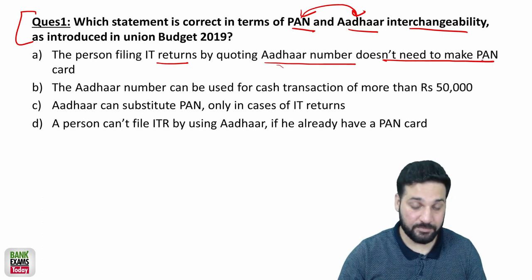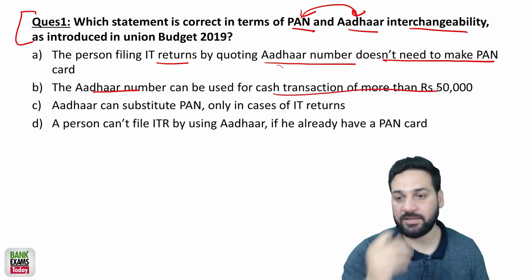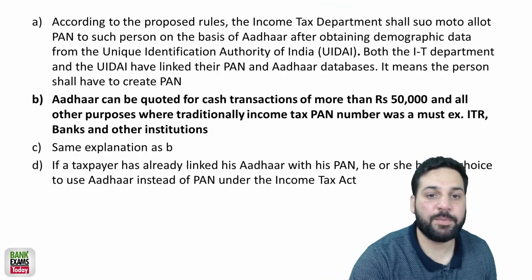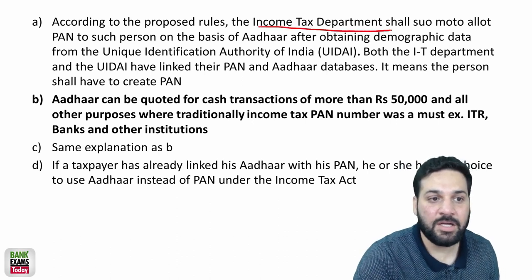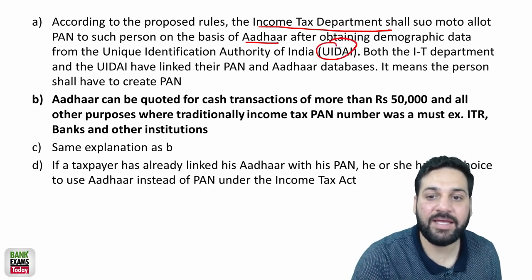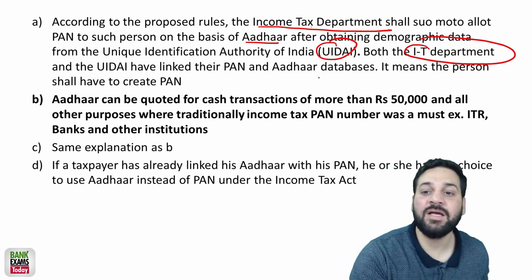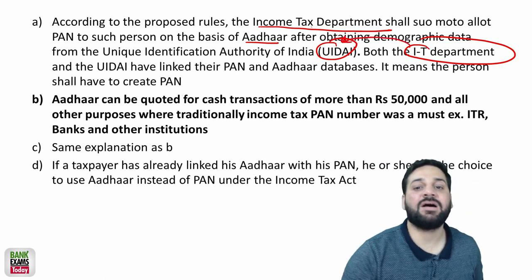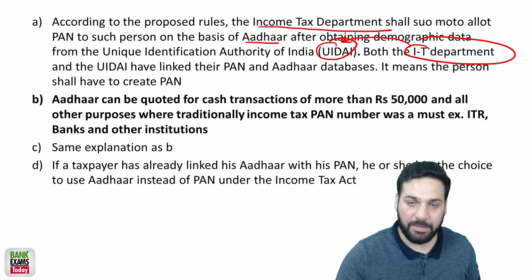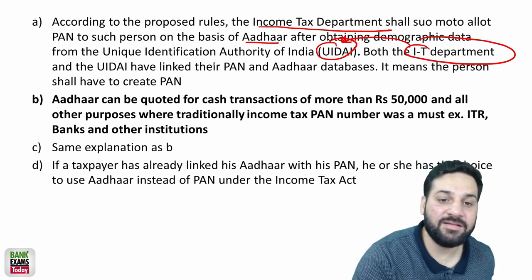That first statement is false — I'll explain in the next slides. The second one: the Aadhaar number can be used for cash transactions of more than 50,000. According to the proposed rules, the income tax department will allot a PAN to such a person on the basis of Aadhaar. The data from UIDAI and the data of the IT department will be merged, so the IT department is going to have access to the UIDAI data.